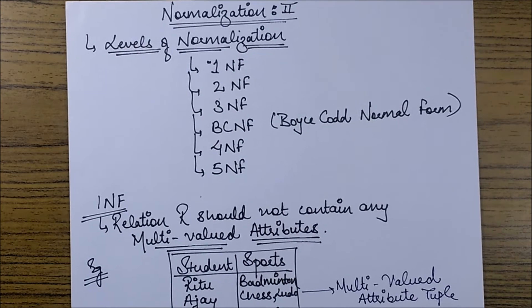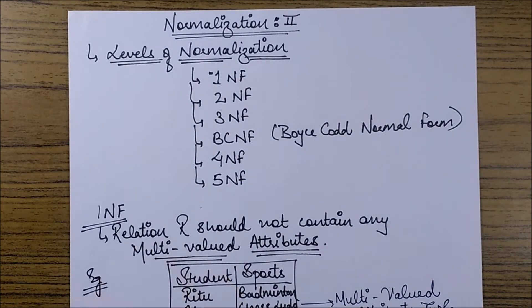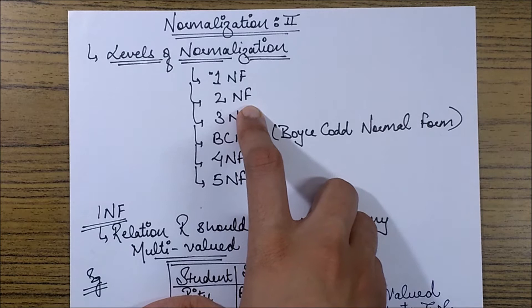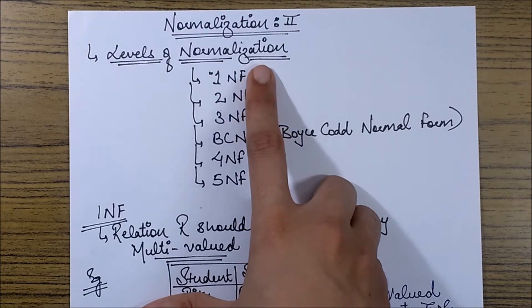So we will be looking at each one by one, and we should know that this basically follows a hierarchy. That is, if we have to see whether a particular table or relational schema is in 2NF, we first need to check about the 1NF or the lower normalization forms.